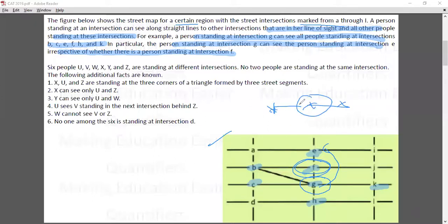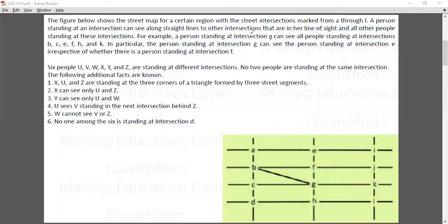So this is the information given to us. Now let's try to read and convey the conditions. Six people are standing at intersections. No two people are standing at the same intersection.